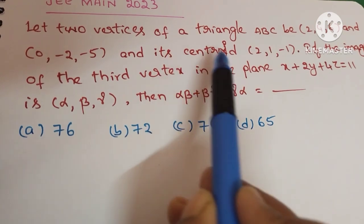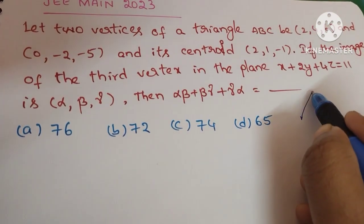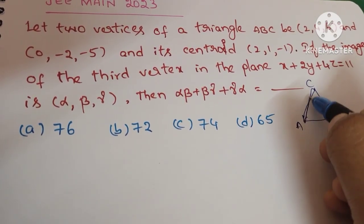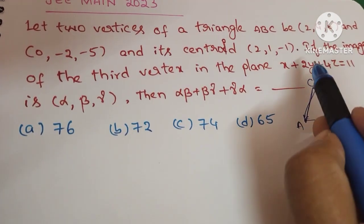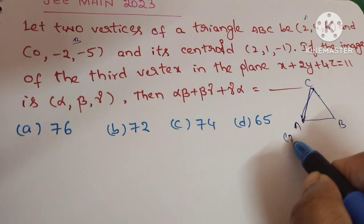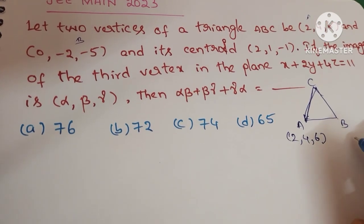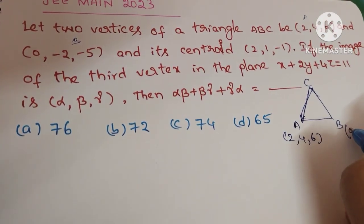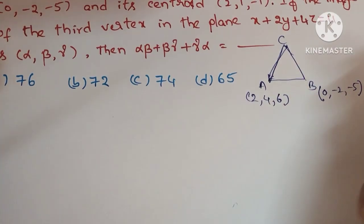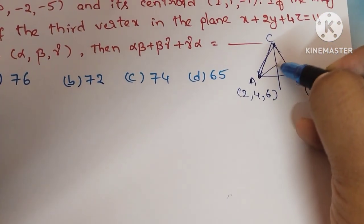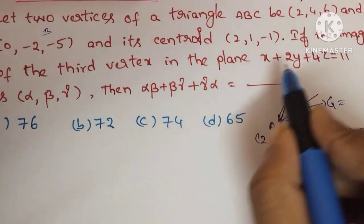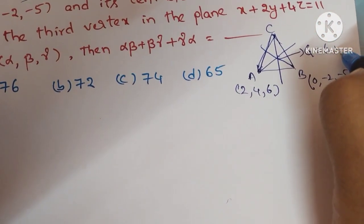Let us draw triangle ABC. We take A = (2, 4, 6) and B = (0, -2, -5). The centroid G is given as (2, 1, -1).